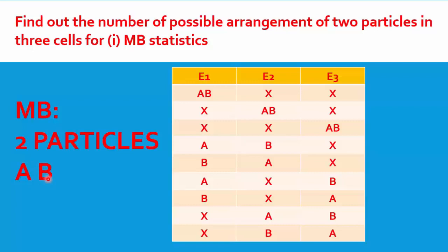For macrostate in this problem, you have three cells and two particles to be arranged. The possible arrangements are called microstates. In the first case, both particles A and B sit in energy level E1, with E2 and E3 vacant. In the second case, both A and B are in E2, with E1 and E3 empty. Similarly, A and B can be placed in the third cell E3, keeping E1 and E2 blank.